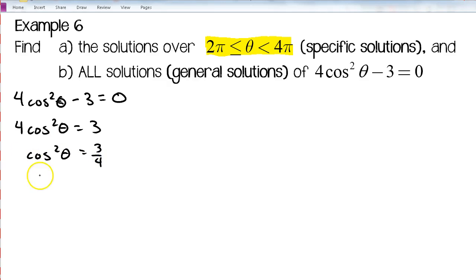And lastly I'll take the square root of both sides, so I get cosine theta equals positive or negative square root of 3 over 4. Again, be careful when you take a square root, just like we did in algebra, you're going to have a positive answer and a negative answer.